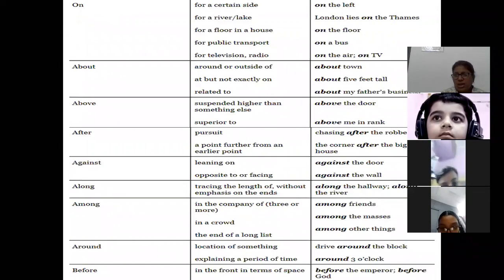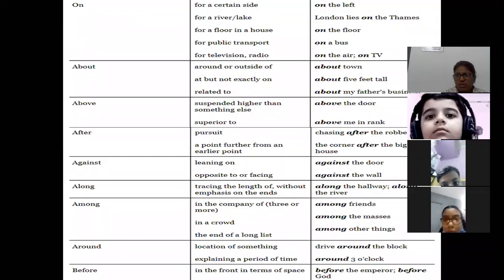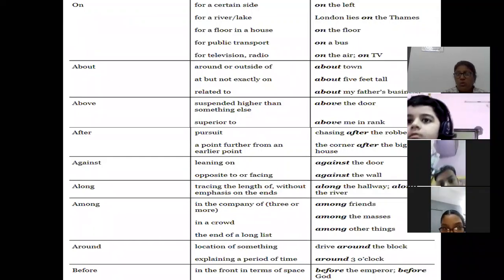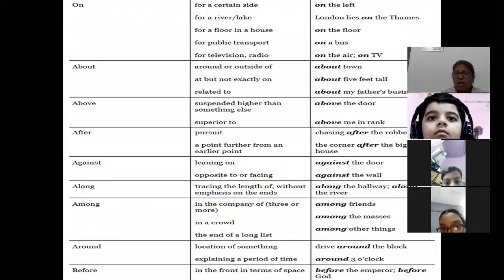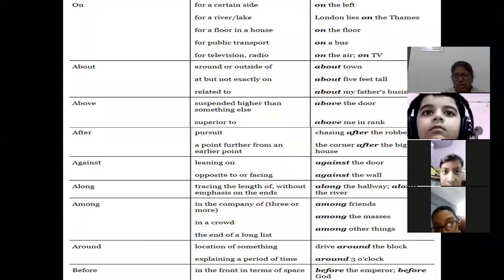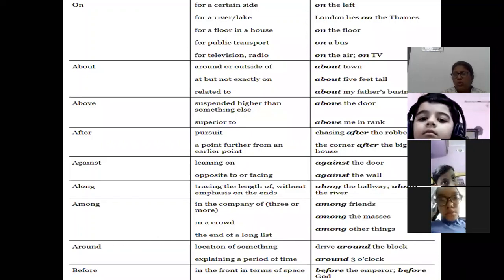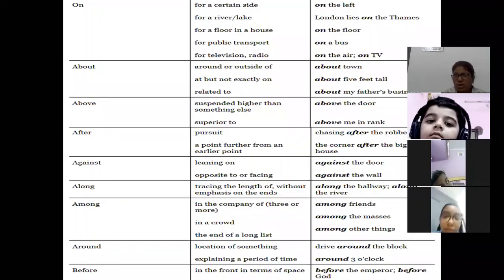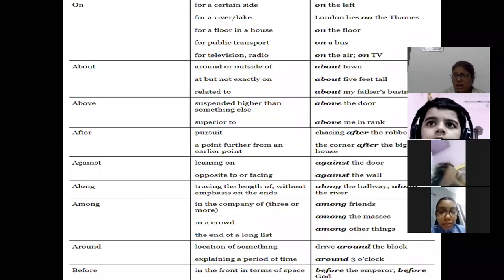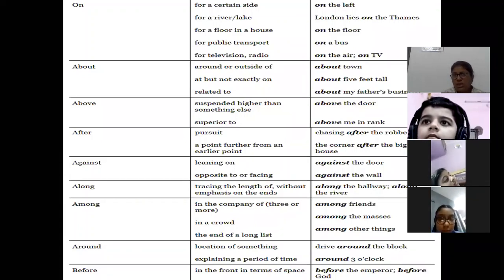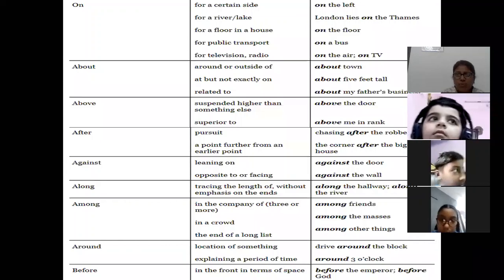'On' can be used for a certain site: keep this book on the left. For a river or lake or flat surface: London lies on the Thames. For a floor in a house: on the floor. For a bus: on a bus. On TV: we never say 'in TV' — we say I saw this news on TV.